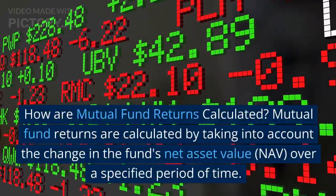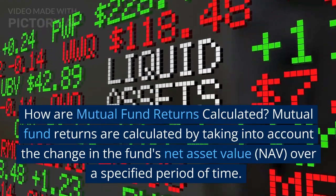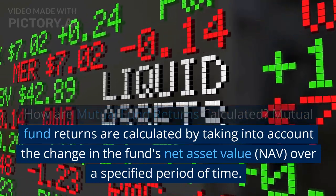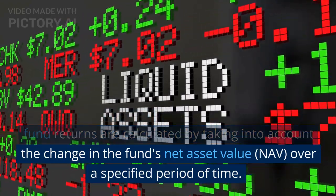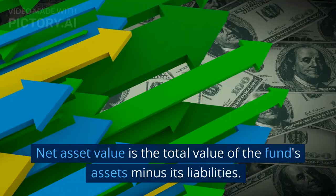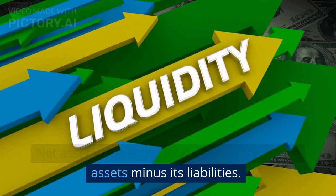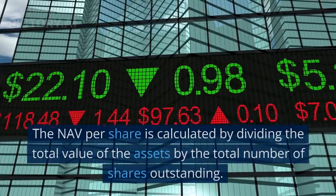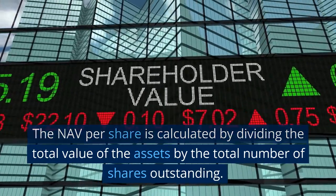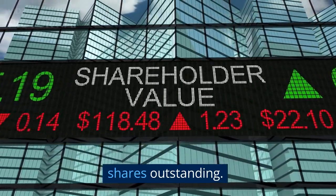How are mutual fund returns calculated? Mutual fund returns are calculated by taking into account the change in the fund's net asset value, NAV, over a specified period of time. Net asset value is the total value of the fund's assets minus its liabilities. The NAV per share is calculated by dividing the total value of the assets by the total number of shares outstanding.